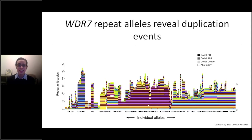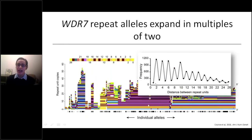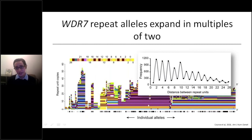To quantify that observation, for each repeat unit sequence we calculated how many positions away from itself it would appear again, summed across all repeat units. We found a remarkable periodicity: you are far more likely to see the same repeat unit sequence an even number of positions away from itself than an odd number of positions away — so much so that you're more likely to see the same repeat unit 26 positions away than right next to itself, one position away.